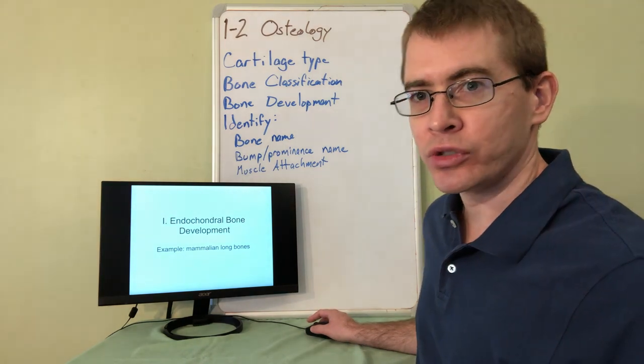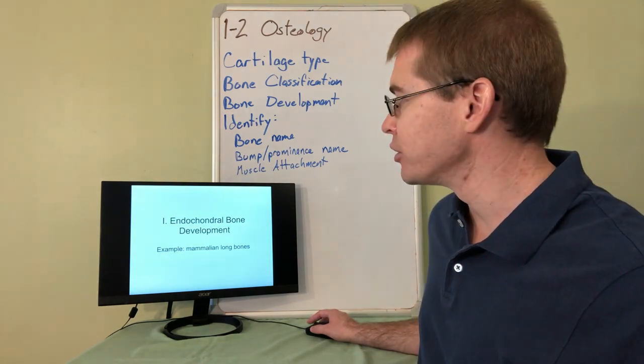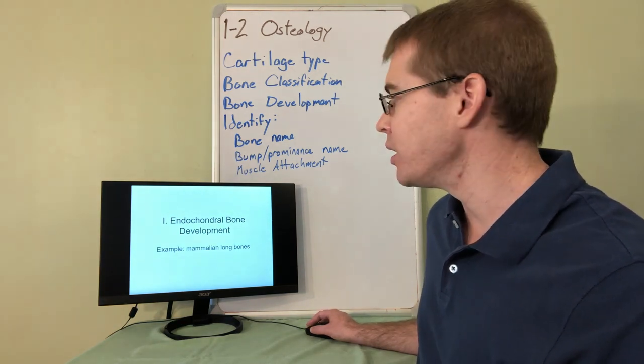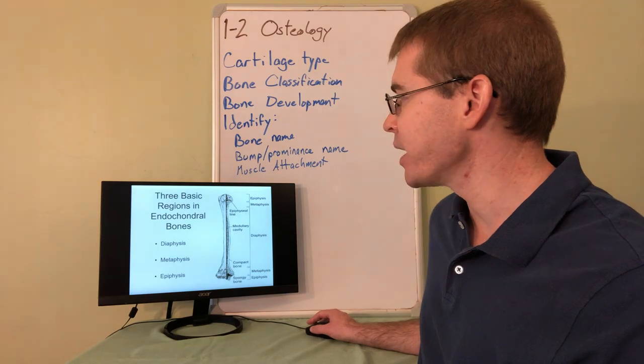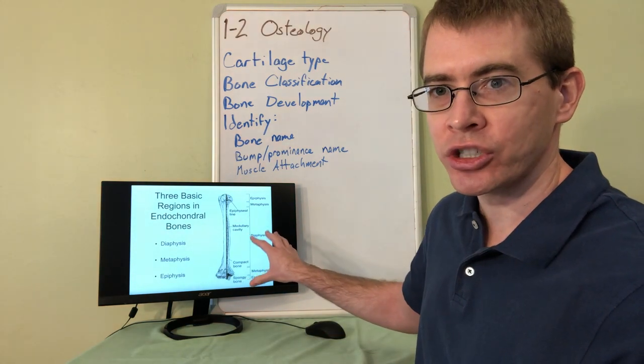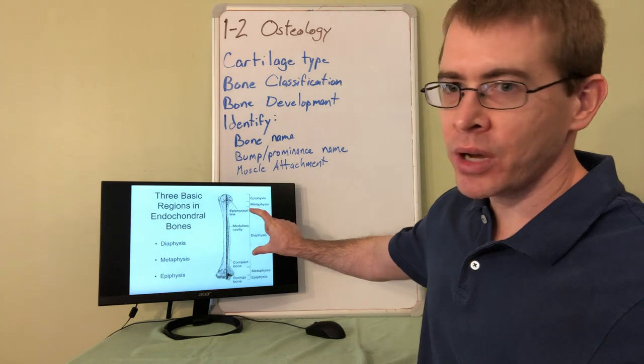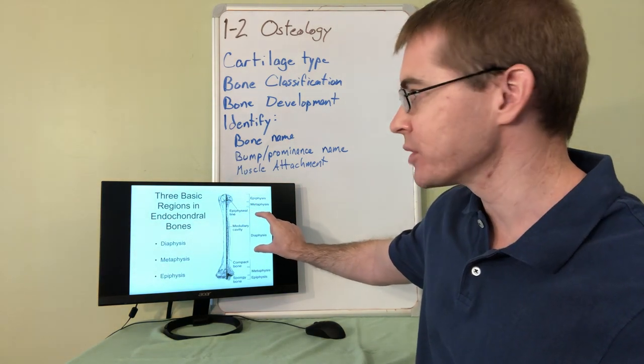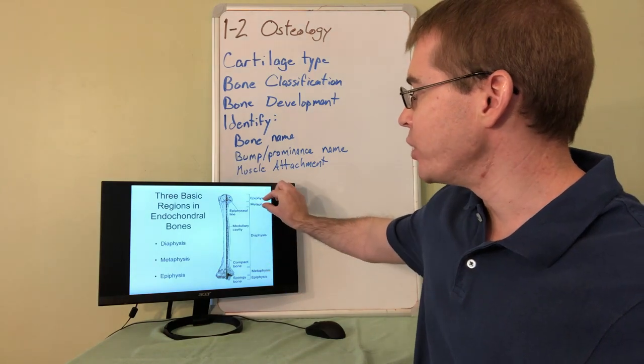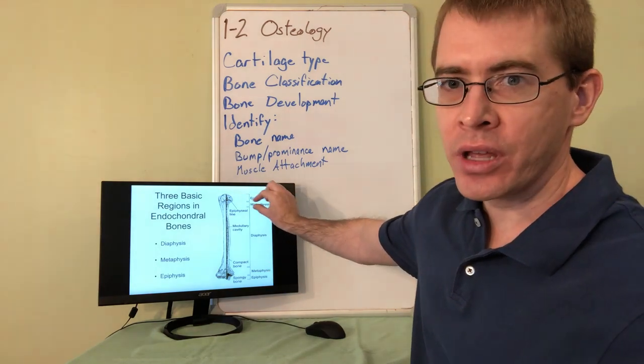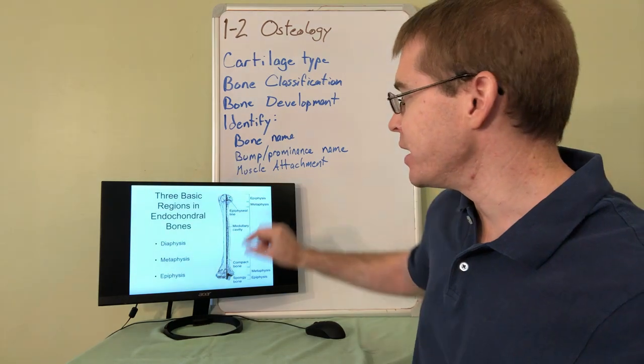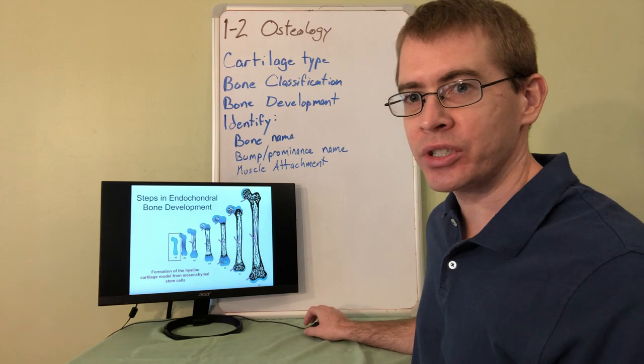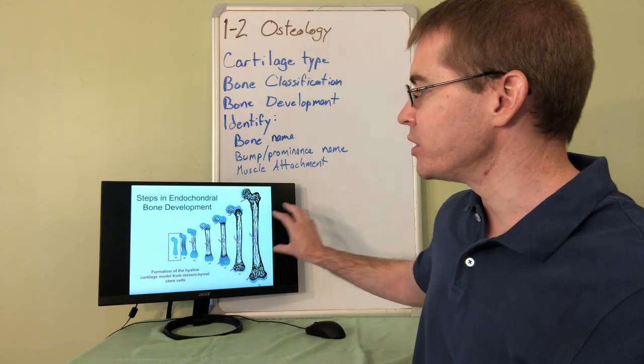So here we'll cover real briefly the endochondral bone development. Most bones in the body, the long bones, are going to be formed through this mechanism. But first we have to understand the structure of bone. These long bones have a central portion, the shaft, called the diaphysis. On either end of the diaphysis, we get to the neck of the bone, called the metaphysis, and at the end, the epiphysis. So these are the different regions of the bone, and these are important when you understand the development of the bone.